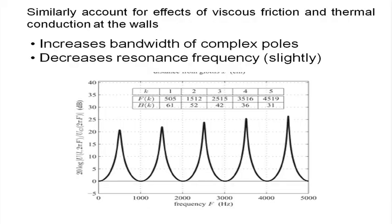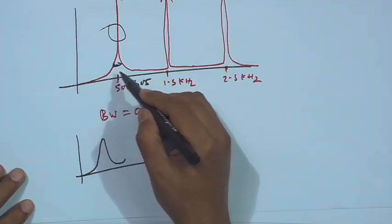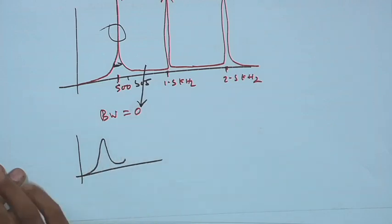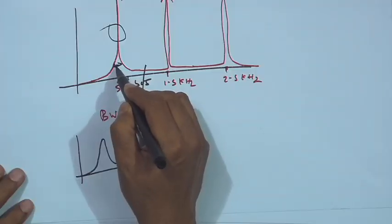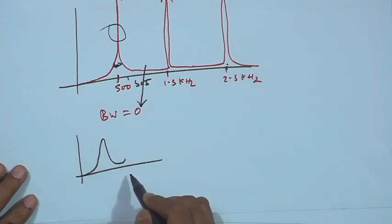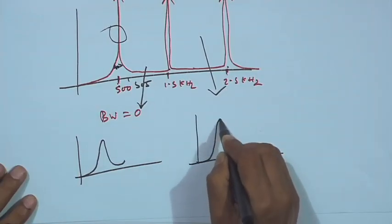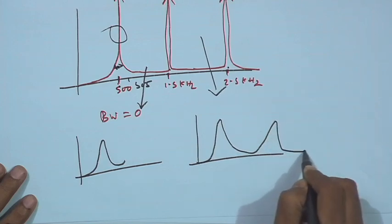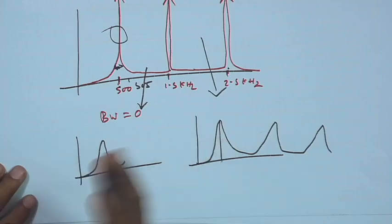If I consider all kinds of losses — friction loss, thermal conduction on the wall, viscosity — I find it increases the bandwidth of the complex poles and decreases the resonance frequency slightly. So if I consider losses with a non-rigid wall, instead of infinite bandwidth at every resonant frequency, it becomes finite bandwidth with a slight shift of the formant in the higher direction.